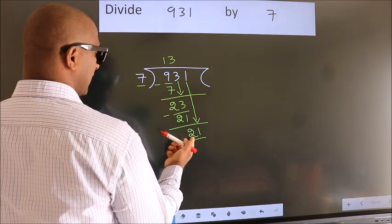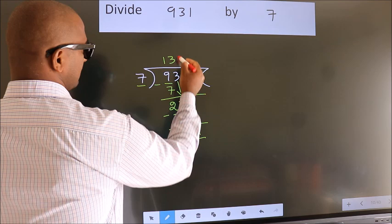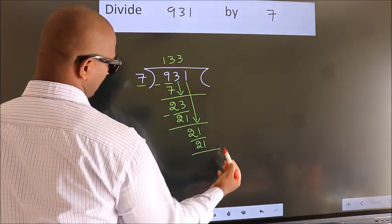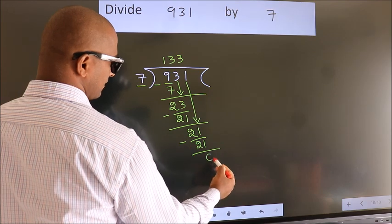When do we get 21? In 7 table. 7 threes 21. Now, we subtract. We get 0.